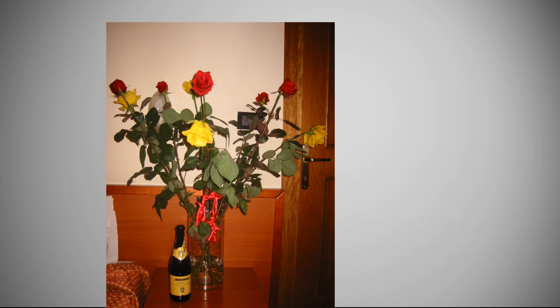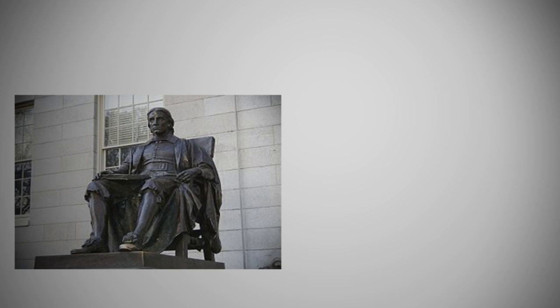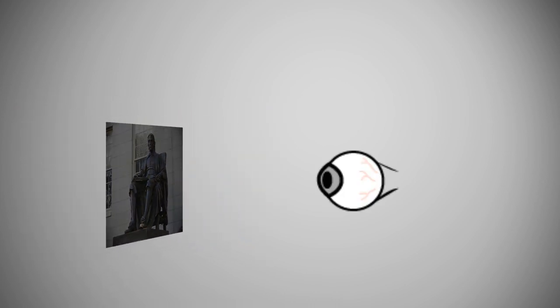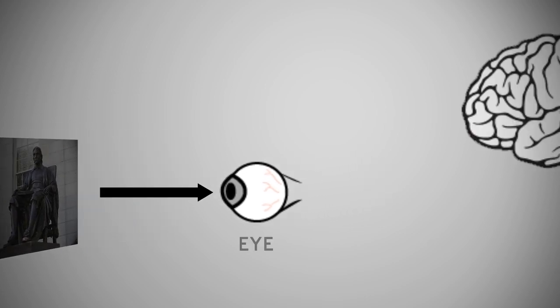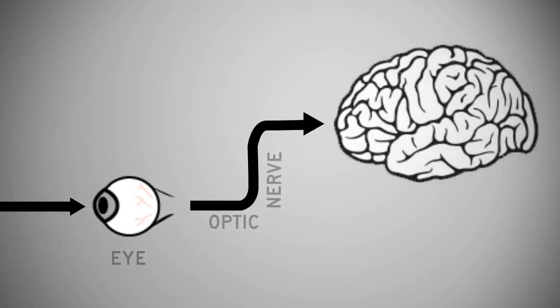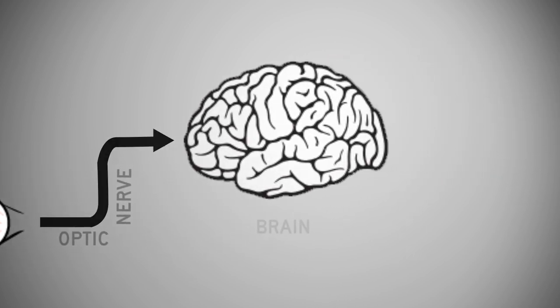However, building a system that can see is a daunting task. To understand how this might be done, we turn to biological systems. So how does biological vision basically work? When we look at a particular scene, the light from the scene enters our eye and is measured by the retina, a layer of light detecting cells in the back of the eye. From there, information is transmitted along the optic nerve, through the midbrain, to the cerebral cortex.